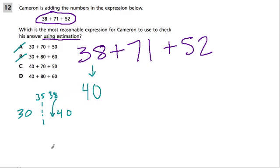71 is between 70 and 80. But if this is 75, halfway between the two, 71 is really close to 70. So I'm going to round it down to 70, because that makes more sense to me.